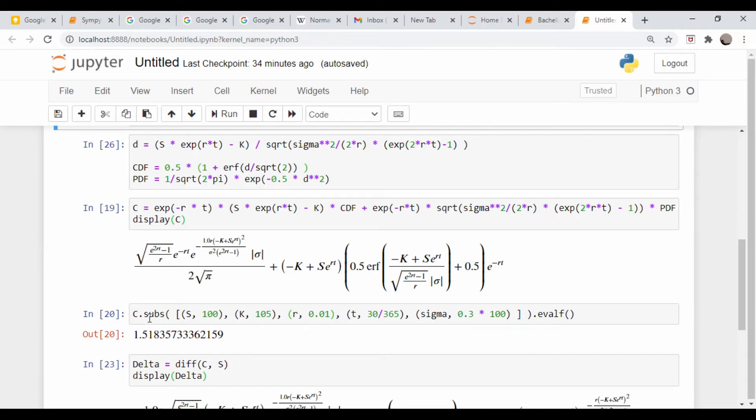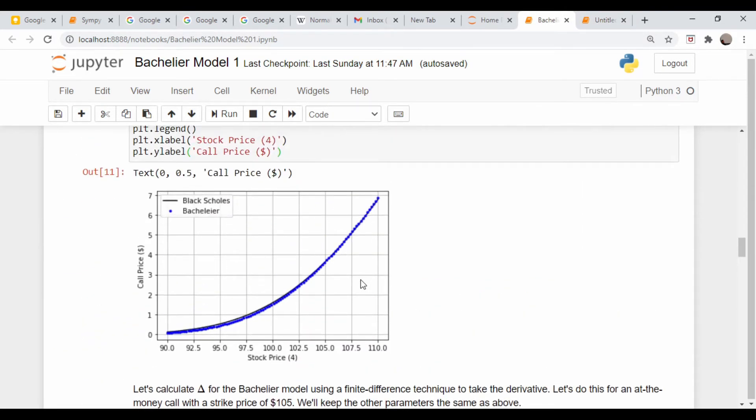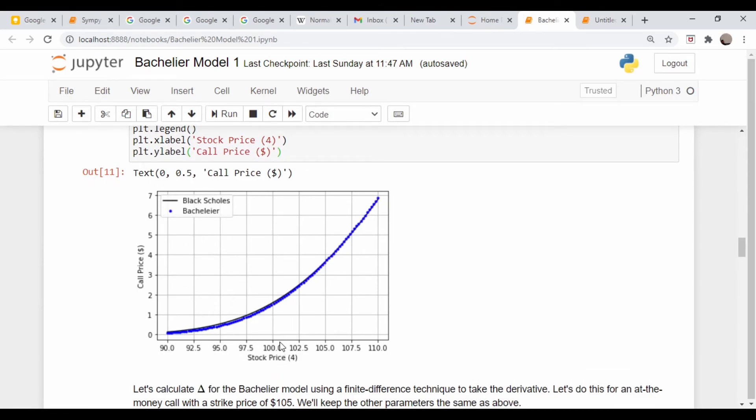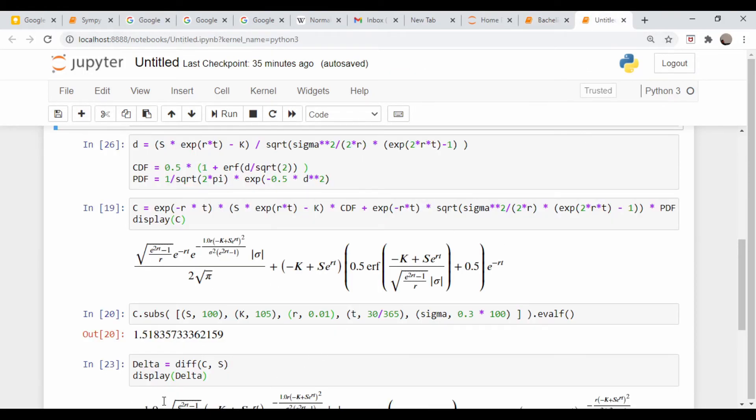Another nice thing about this is you can substitute in values and get a numerical answer out if you want to evaluate a specific stock price, strike price, whatever. Let's go back to here and keep these volatilities and whatnot. Let's just look at the 100 strike price. That call based on this plot should be about a buck 50. We use the substitute command subs, that takes a list of tuples where you define S equals 100, K equals 105, and so on. You could either store this in a separate variable and call the eval F floating point evaluation function on it, or just tack it on to the end here, which is what I did. And we get a dollar 51, which is what we'd expect.